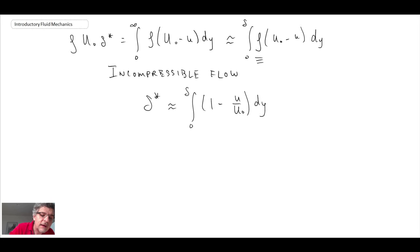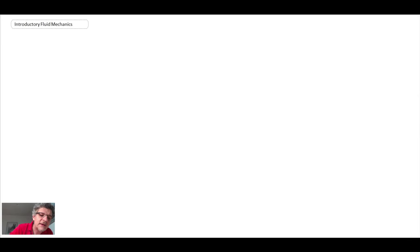That is the displacement thickness, a parameter you'll sometimes come across when people are talking about boundary layers. Another one that is quite common for free shear flows or wall-bounded shear flows is momentum thickness. Momentum thickness is a quantification of the amount of viscous activity taking place within the shear flow, and it is a length scale.